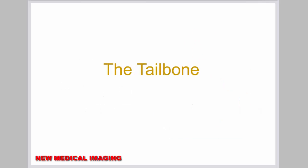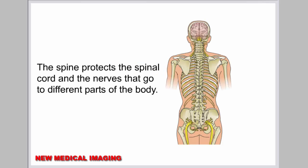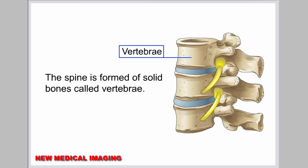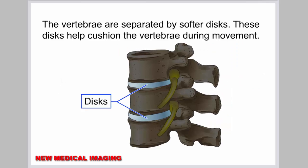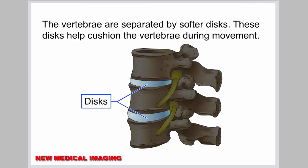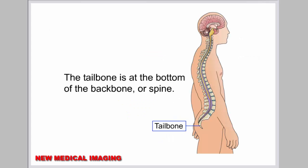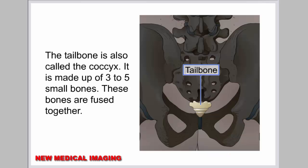The spine protects the spinal cord and the nerves that go to different parts of the body. The spine is formed of solid bones called vertebrae. The vertebrae are separated by softer discs. These discs help cushion the vertebrae during movement. The tailbone is at the bottom of the backbone or spine. It is also called the coccyx and is made up of 3 to 5 small bones that are fused together.